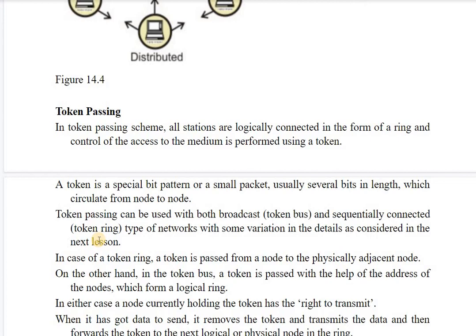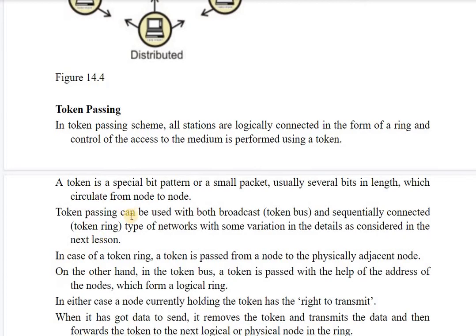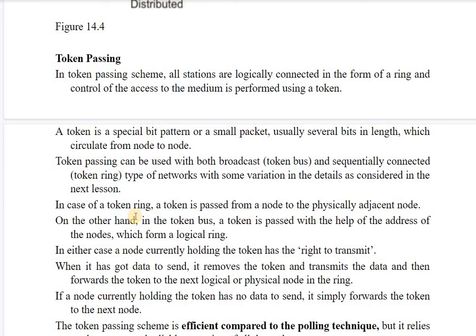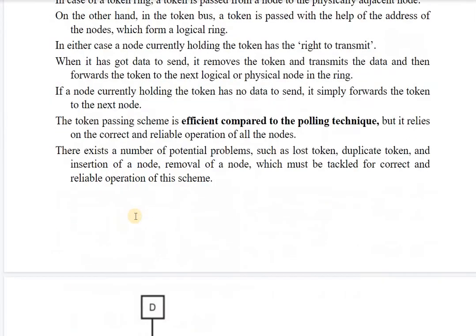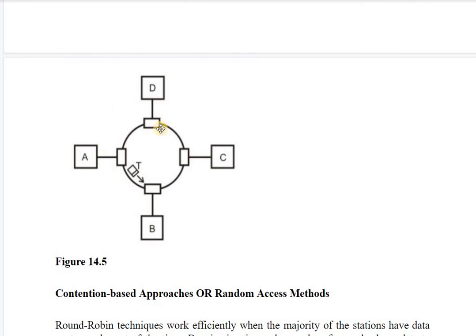The second round robin technique is token passing. In token passing, all stations are logically connected in a ring and access is controlled using a token. Here we have four computers connected in a logical ring. Whenever a computer wants to send data it acquires the token — a pattern or packet revolving in the ring. Whoever is ready to send acquires the token, attaches data to it, and circulates it again on the ring with the destination address.